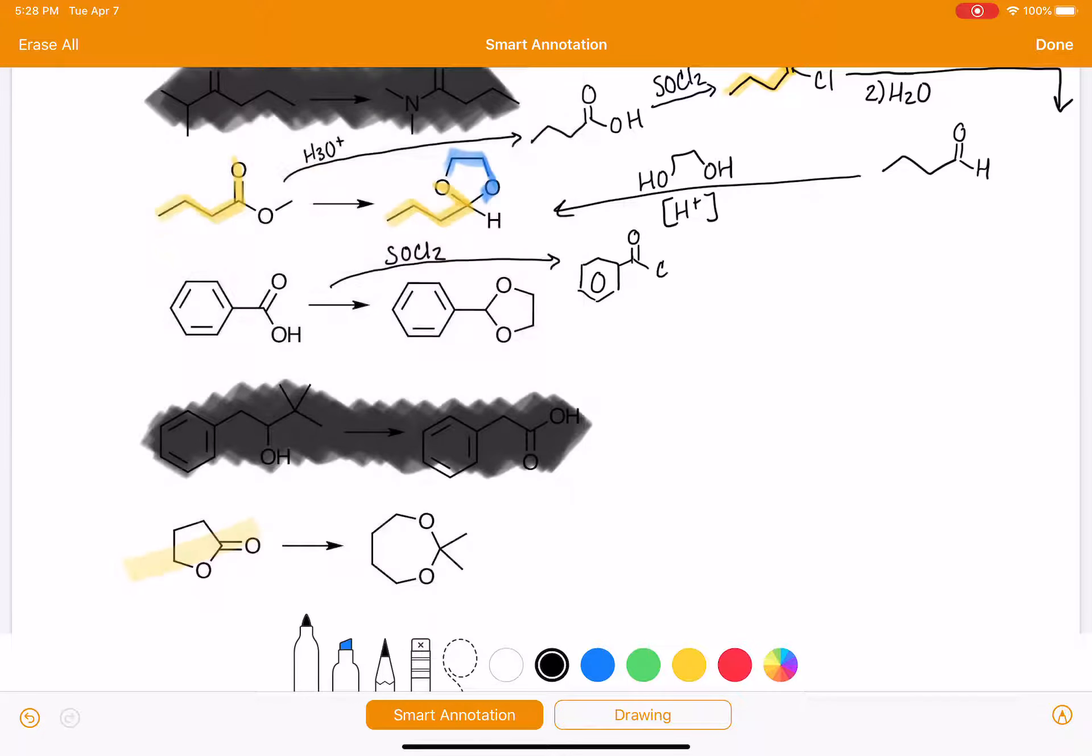not benzaldehyde, once we get to the acid chloride, then let's take a look at our carbons and see if we need to add any carbons to the molecule. And it looks like we do not, so this problem is almost exactly the same as the last one. We need to convert that to the aldehyde.